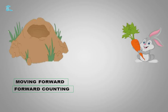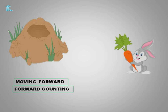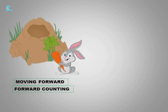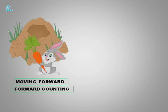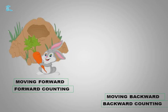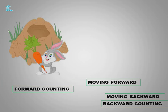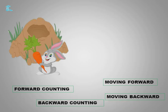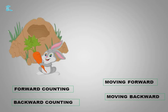So how will it come? It has to come backwards to its home after taking the carrot. So this is known as moving backward. In numbers we call it backward counting. Moving forward means going front; backward means coming backward.